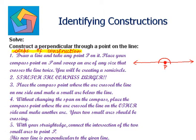The second step says: stretch the compass larger. When it says stretch the compass larger, it means that while creating the perpendicular through a point on the line, the distance should be more than half of the line you have taken. Now place the compass point where the arc crossed the line on one side. Place your compass point here and make a small arc below the line.